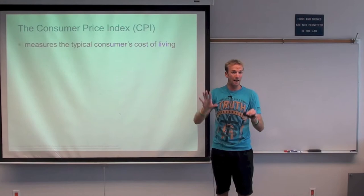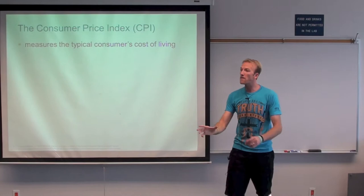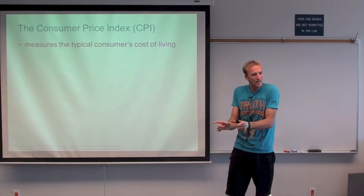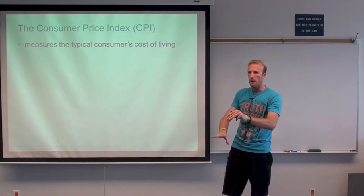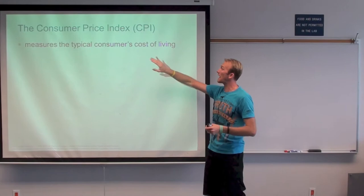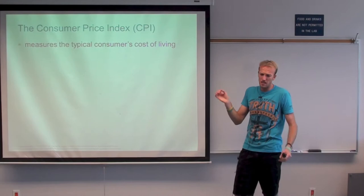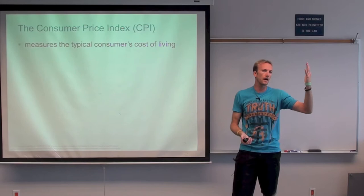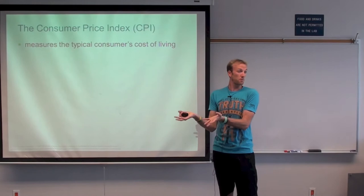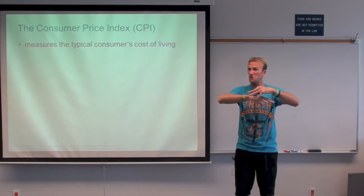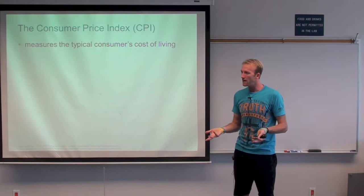Some prices are going up, some prices are going down. The question is: how do I put an average on there? How do I talk about the average level of prices in the economy? The idea is to create the consumer price index, which measures the cost of living of the average person. We look at what the average person buys and talk about the price of all of that — whether that altogether goes up or down. We reduce this multi-dimensional problem — thousands of goods consumers buy — to one number, like 5%.